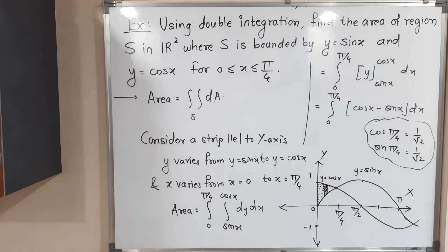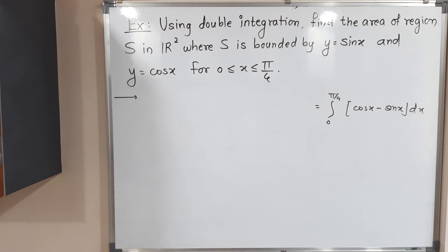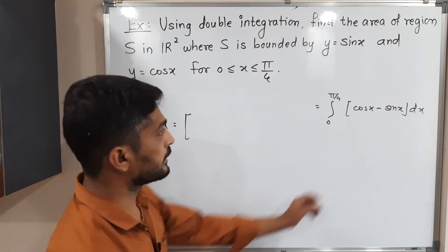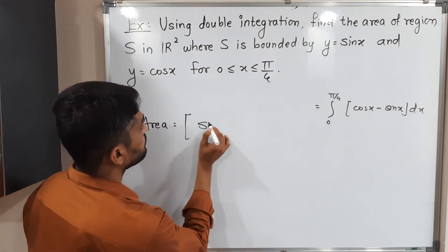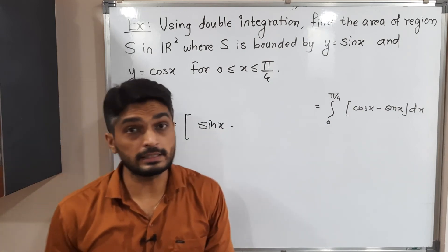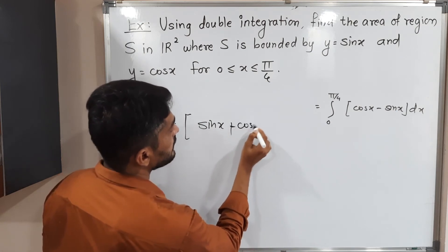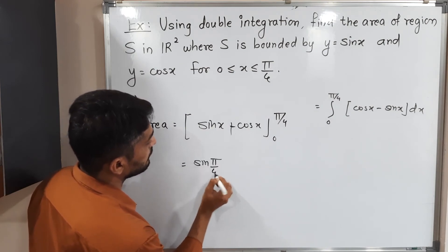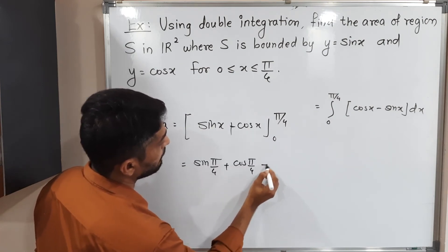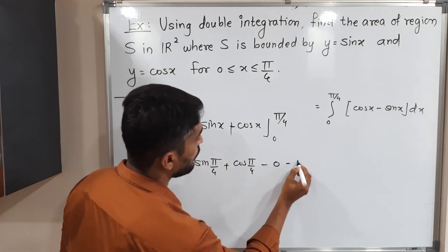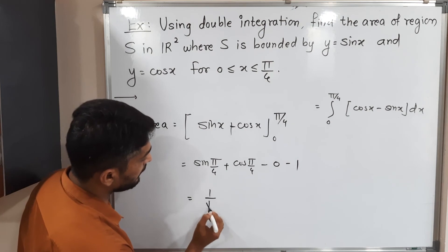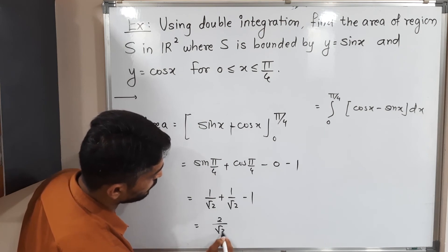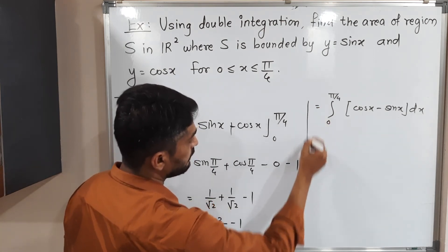Let us simplify further. Area = integration of cos x is sin x, and integration of sin x is −cos x, so we have [sin x + cos x] from 0 to π/4. Putting in the upper limit: sin(π/4) + cos(π/4) = 1/√2 + 1/√2 = 2/√2. Subtracting the lower limit: sin(0) + cos(0) = 0 + 1 = 1. So area = 2/√2 − 1.